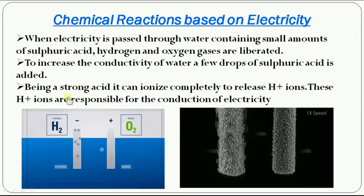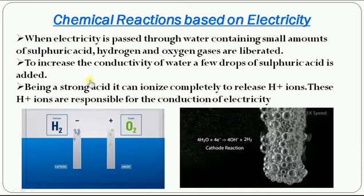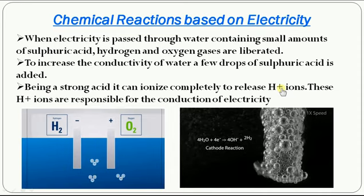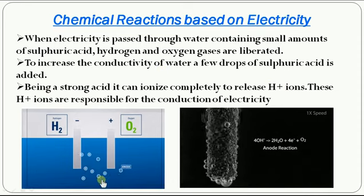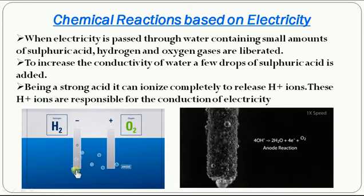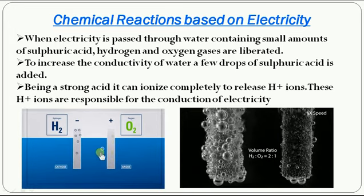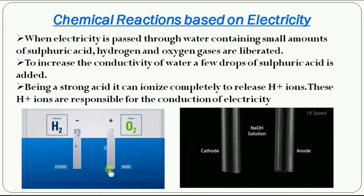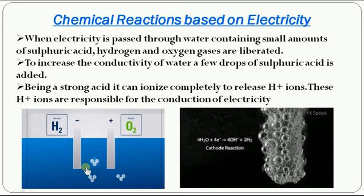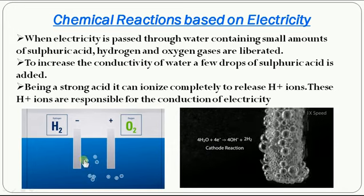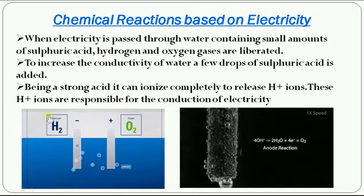Because sulfuric acid is a strong acid, it ionizes completely — it splits into H+ and SO4-. The H+ ions are responsible for the conductivity of water. In water H2O, H is positive and oxygen is negative. The H+ particles move primarily to the negative electrode, which we call the cathode. H+ alone will move to the cathode and release hydrogen gas.